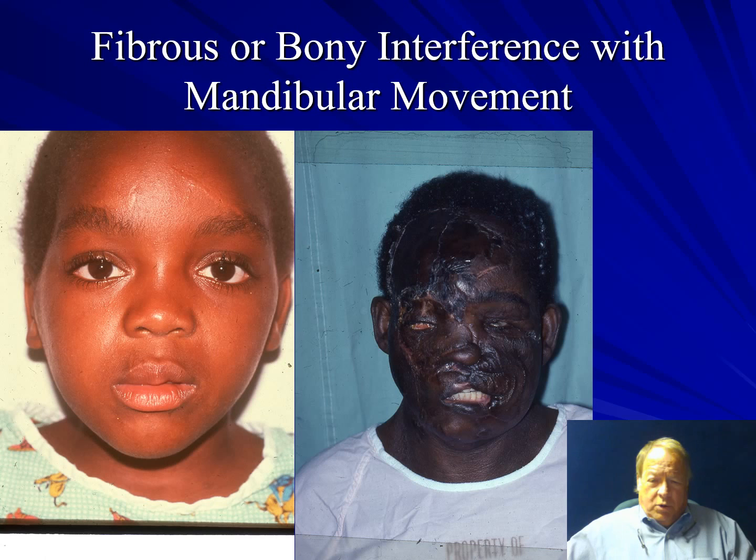Other long-term problems include fibrous bony interference with mandibular movement, as seen in the burn case. Returning to the young girl with the mandibular fracture, a problem we oftentimes face is where significant amounts of bone and teeth have been lost — and this is the end result in the shotgun case shown earlier.